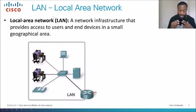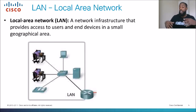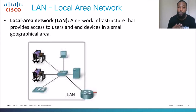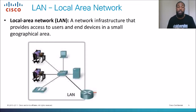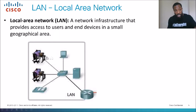Before we talk about exactly how routers do it, we need to talk about the difference between a LAN — local area network — and a WAN — wide area network. A local area network is a network infrastructure that provides access to users and end devices in a small geographical area, basically like a school, a small campus, or a corporate office. This would be your local area network — all your end devices like your PCs, your phone, your users.